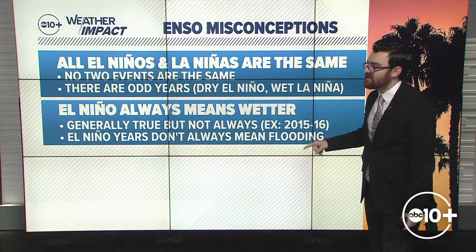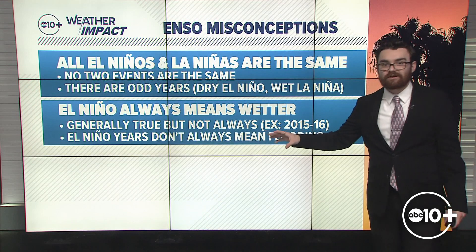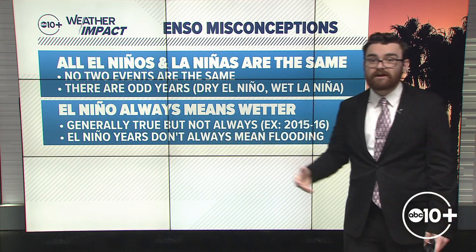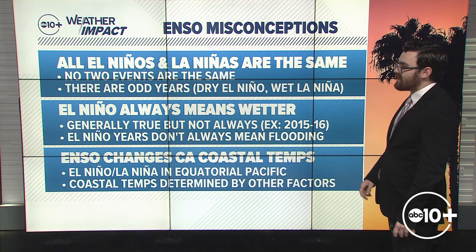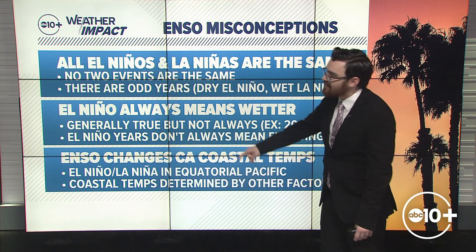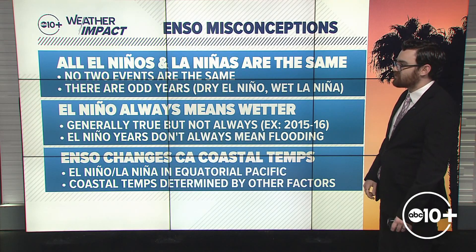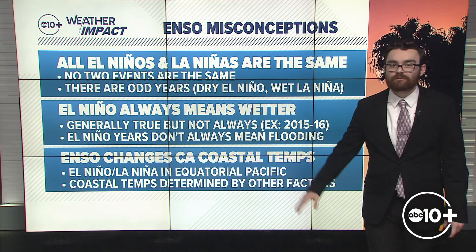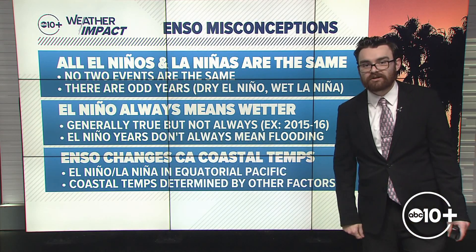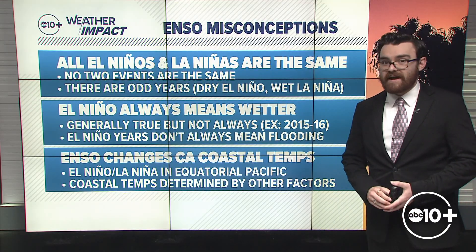And El Niño years don't always mean flooding. Oftentimes when we think about an ARkStorm scenario or massive flood events, we think about it being during El Niño — not always true. And lastly, the misconception that ENSO changes California coastal temperatures: no — El Niño and La Niña exist only in the equatorial Pacific, and coastal temperatures are determined by other factors.